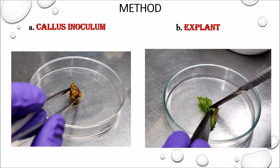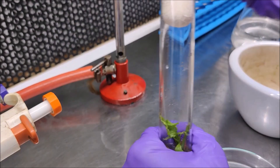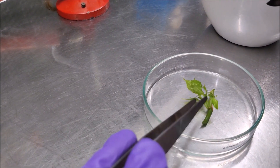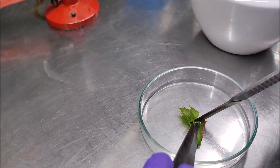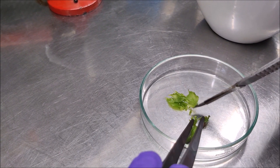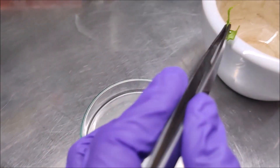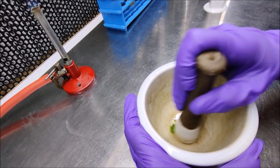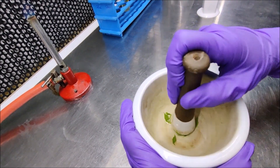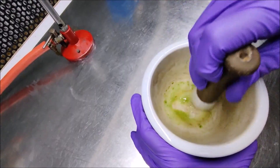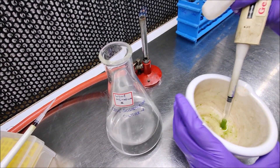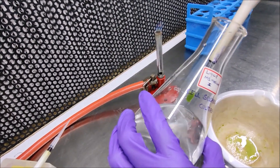Another method for initiating culture is taking cells from an explant tissue. Leaf tissues were obtained from an in vitro grown plant. Cells were isolated from the intact plant organs by gentle grinding of the leaves with mortar and pestle. The cells were then transferred to a liquid medium.